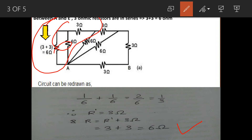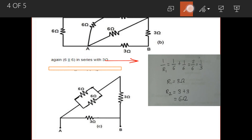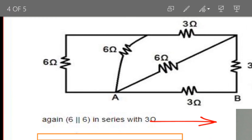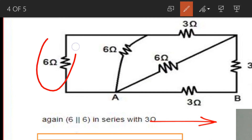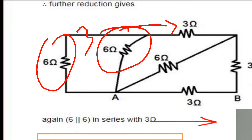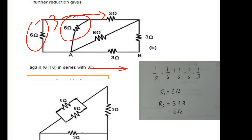The combination of this part is 6 ohm. This part's 6 ohm and this 6 ohm are in parallel connection. On simplifying that particular circuit, we observe that this 6 ohm resistor and this other 6 ohm resistor are in parallel, giving a combination of 3 ohm. That 3 ohm combination is then in series with this 3 ohm resistor.